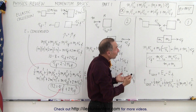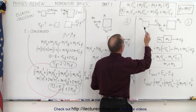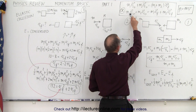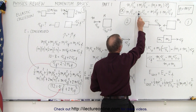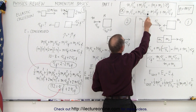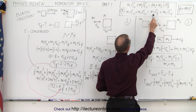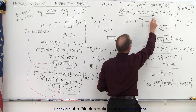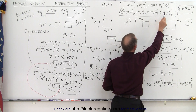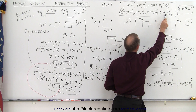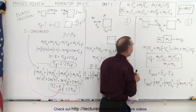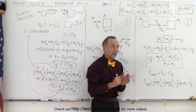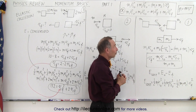Sometimes the objects don't stick together, so the initial momentum of the first object plus the initial momentum of the second object equals the final momentum of the first object plus the final momentum of the second object. Notice that the two final velocities are going to be different — they're independent of one another.